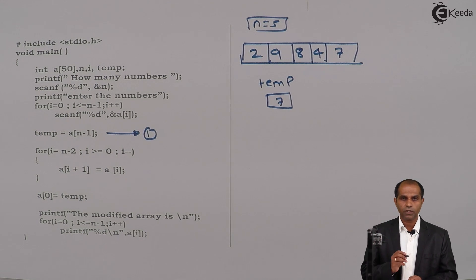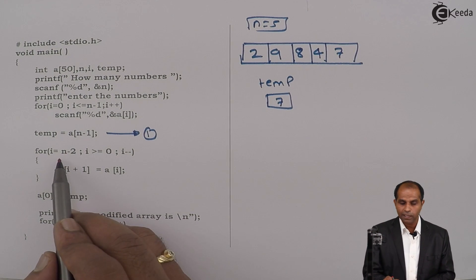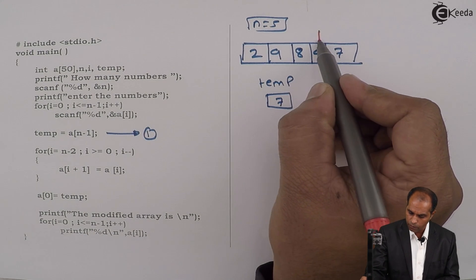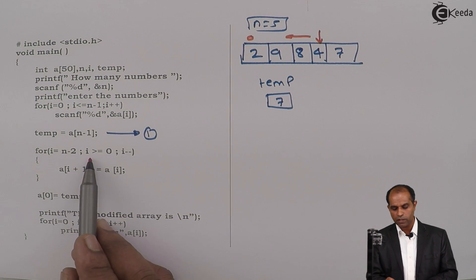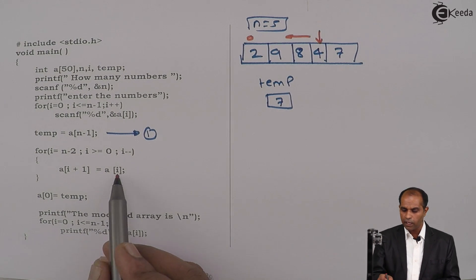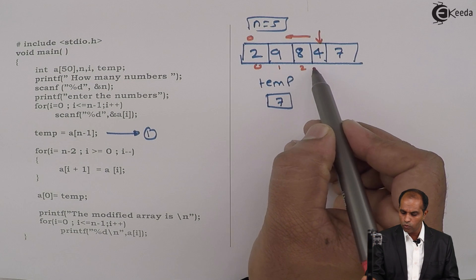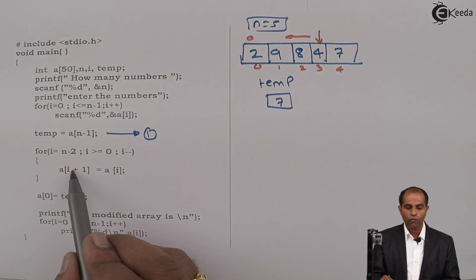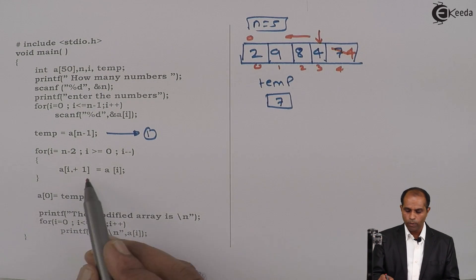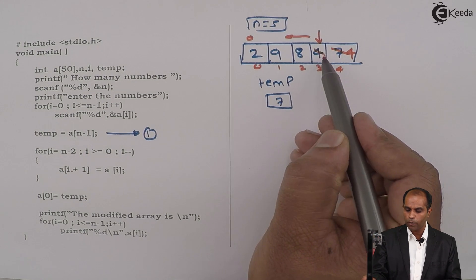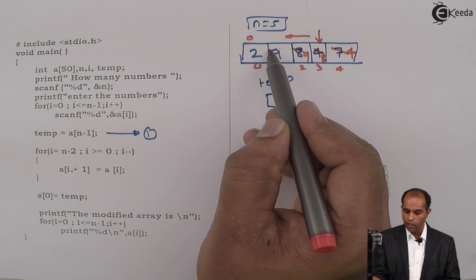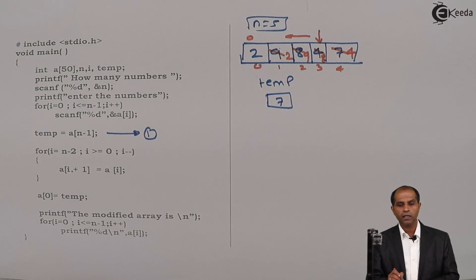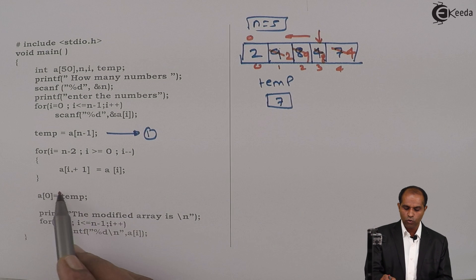I will observe this operation with a different color. A of N minus 1 goes to temp. After that, I start the loop from N minus 2 and go towards 0: i from N minus 2, i greater than equals 0, i minus minus. A of 3 is copied to A of 4 — that gives 4. i is further reduced to 2. A of 2 is copied to A of 3. i becomes 1. A of 1 is copied onto A of 2. A of 0 is copied onto A of 1. When i is minus 1, the loop turns false.